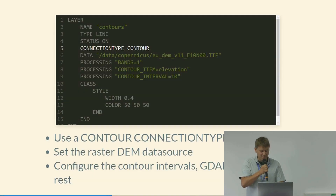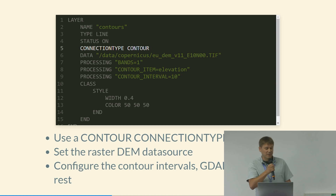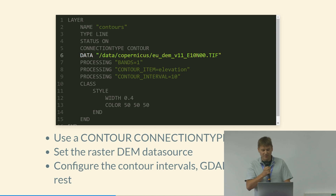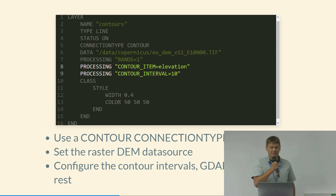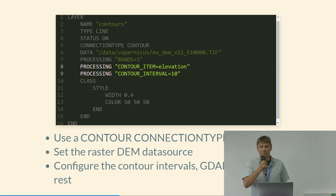For the contour, in your MapFile it has its own connection type — underneath it's all GDAL doing the work, but you drive it all using MapFiles. You set your connection type to contour, set your data source (in this case a Copernicus DEM TIFF), then choose the item in the GeoTIFF to use for the elevation value, and set the contour interval — for example 10-meter intervals. You can play around with those settings to get different contour outputs.